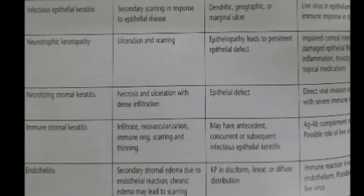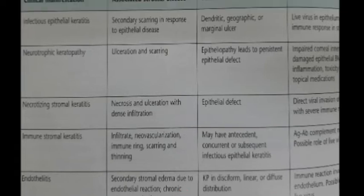Coming to endothelitis, there is secondary stromal edema due to the endothelial reaction. KPs are present in the disciform, linear, as well as diffuse forms, and this is due to an immune reaction. In neurotrophic keratopathy, there is ulceration and scarring in the stroma, caused by impaired corneal innervation and damaged epithelial cells.